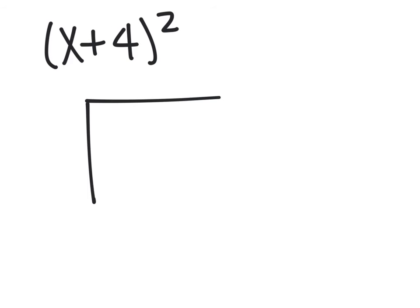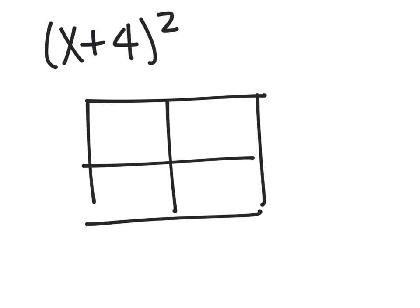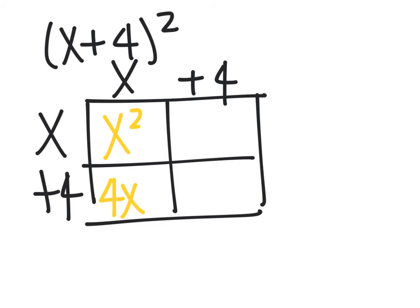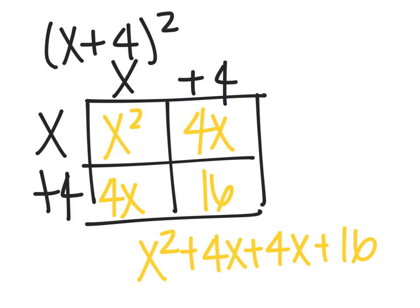I'd like to remind you that if you have a problem like (x+4)², you can always use the box method to multiply this. That means both of your sides are x+4. x times x is x², x times 4 is 4x, x times 4 is 4x, and 4 times 4 is 16. So my problem is x²+4x+4x+16.